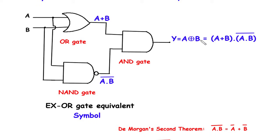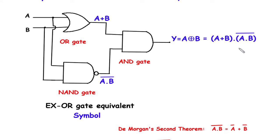Now again, this is also the Boolean expression for XOR gate. Y is equal to A encircled plus B, which is equal to A plus B, into A dot B bar.